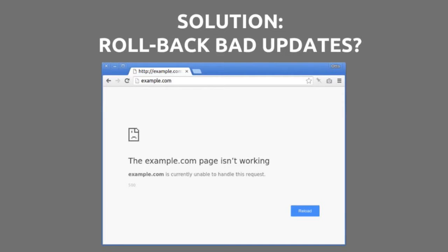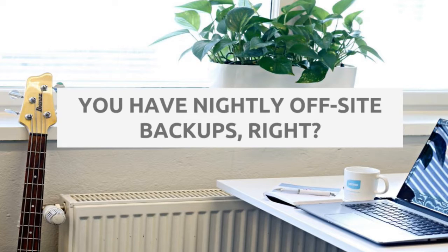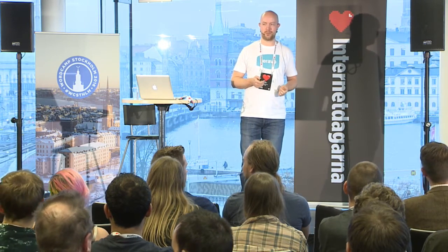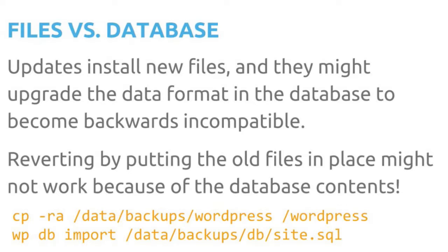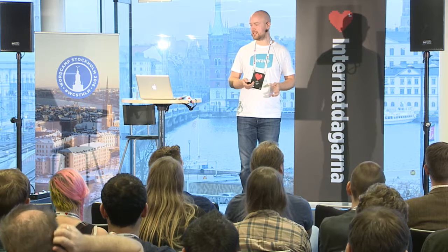One solution you might think of is rolling back — if you have a bad update, just put in the old files. But first of all, how many of you are sure you have fresh backups that actually work? Do you test your backups, and are they off-site? People usually neglect backups. Also in WordPress, most settings and content are in the database, and a new version might update something there, so rolling back isn't as simple as copying the old software files — you may also need to revert the entire database.